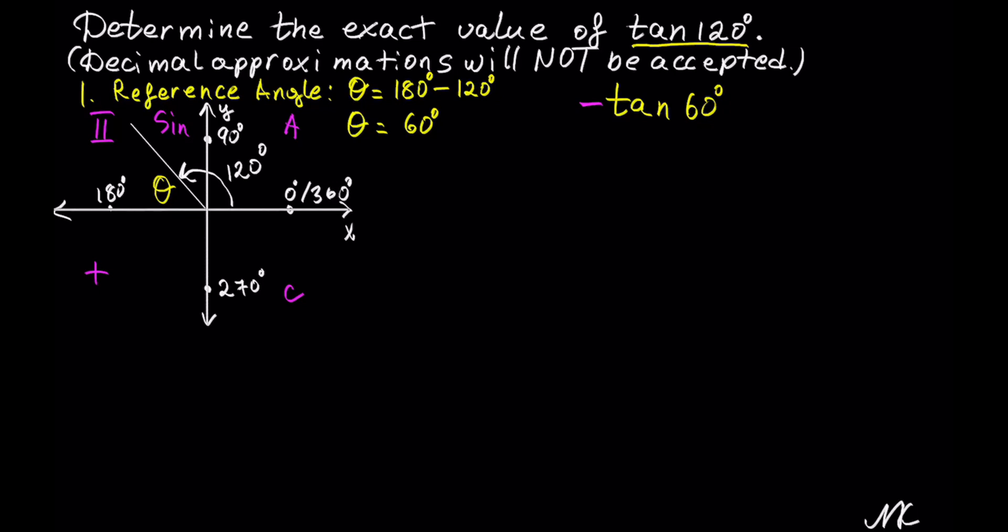So calculating negative tangent of 60 degrees gives us the exact value of tangent of 120 degrees. If you have memorized the exact ratios, you can plug in the answer now. If you have not, we can use the reference table to calculate it.